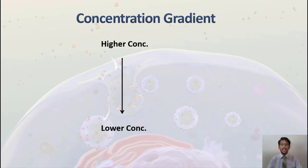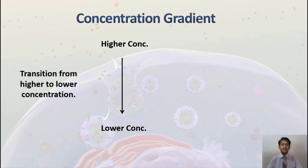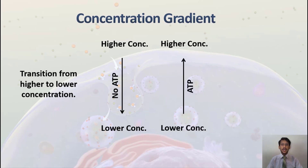Concentration gradient is a transition from higher concentration to lower concentration. When you move something from higher concentration to lower concentration, no energy is required — no ATP is used. But if you reverse this process, meaning you move things from lower to higher concentration, ATP is required because energy is needed.